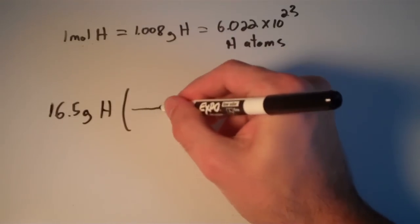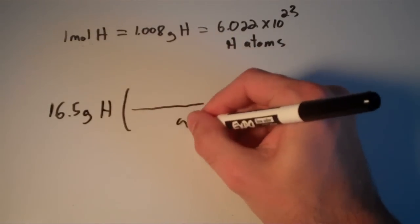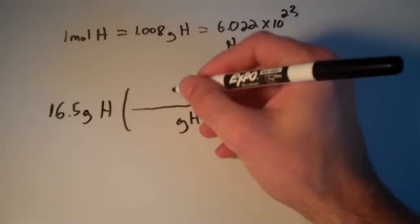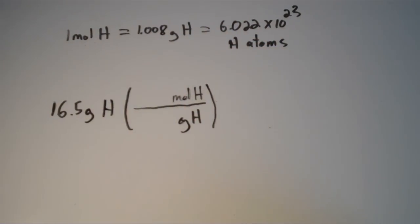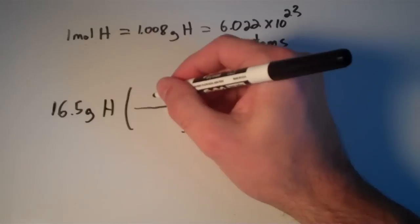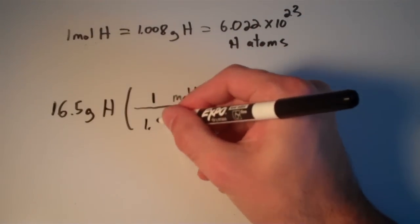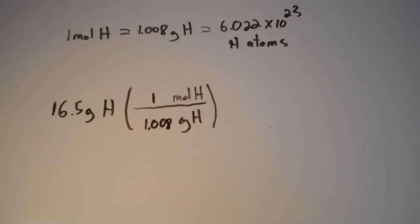So in my conversion factor, I'll put the grams of hydrogen on the bottom, and I'll put the moles of hydrogen on top. And for every one mole of hydrogen, we have 1.008 grams of hydrogen.